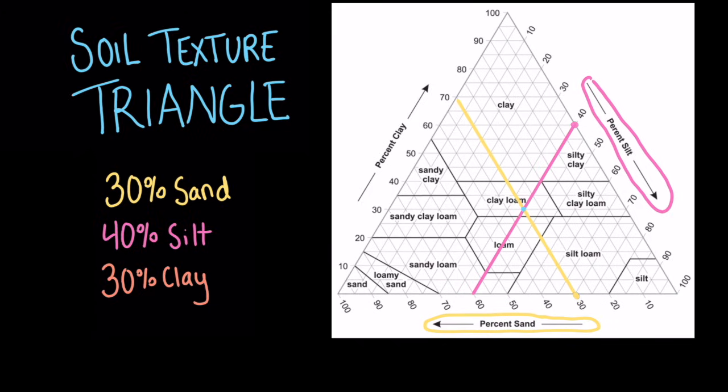But to double check, let's draw a line from the 30% clay mark to the other side of the triangle, like this. As you can see, these three lines all intersected at the same point, right here in clay loam. So we know that we have clay loam.